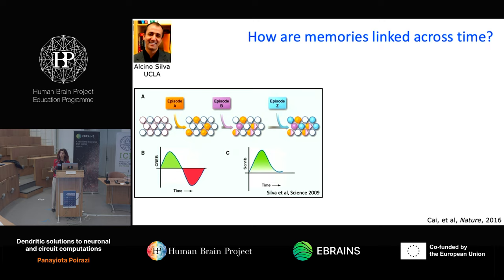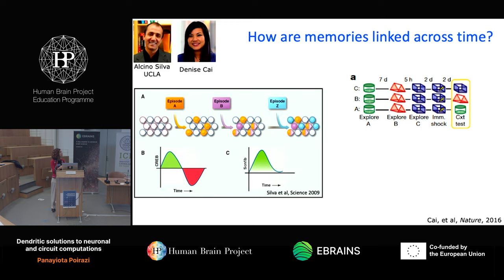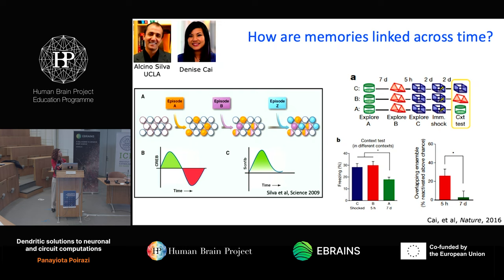Alcino had a theory that if you experience two memories in close temporal proximity — within just a few hours — these memories will be linked because they will be stored in the same population of neurons. Denise Cai, a brilliant post-doc in his lab who now has her own lab in New York, put animals in different contexts separated by either seven days or five hours. She found that if you separate two memories by just five hours, the animals will freeze in both contexts, although they were only shocked in one, showing that the animals associated these two locations because they were experienced in close time intervals.